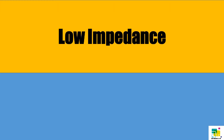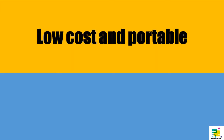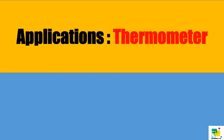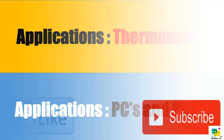Analog signals have low impedance and digital signals have more impedance. Analog hardware is low cost and portable, but digital hardware cost is high and not easily portable. Applications of analog include the thermometer, and applications of digital include personal computers and personal digital assistants.